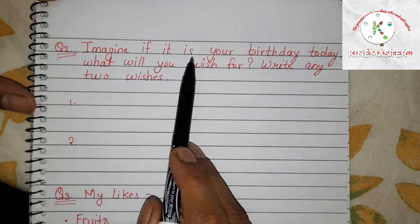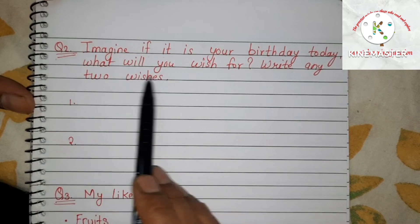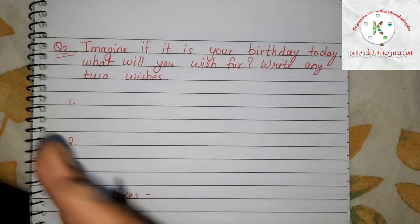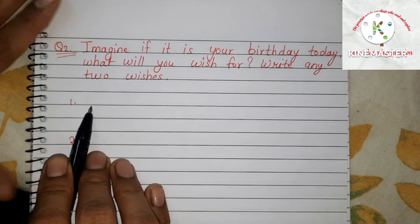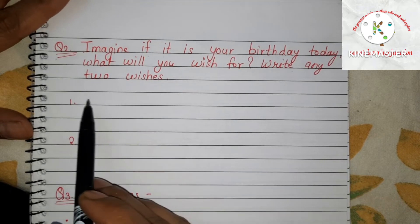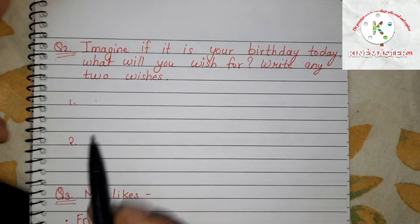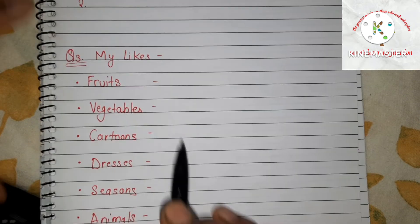What will you wish for? Write any two wishes. The child has to write what he would like to have on his birthday or other wishes he wants fulfilled. For example, maybe the child wants a bicycle, so he can write 'I want a bicycle for my birthday,' or 'I want to be a famous cricketer' — anything he wants to be.